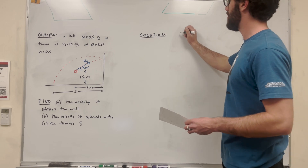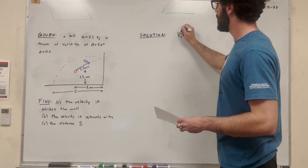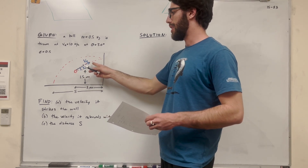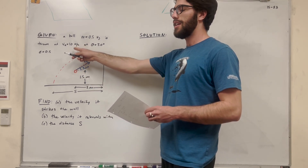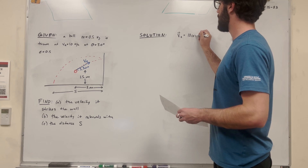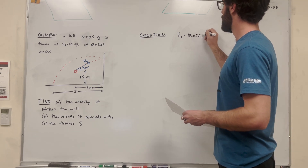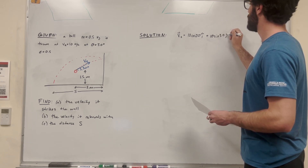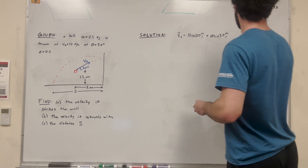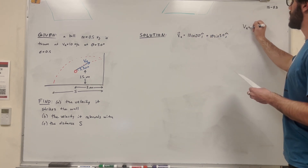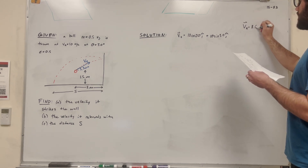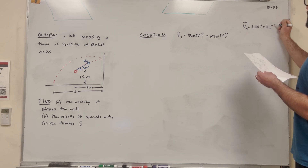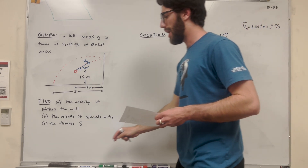Let's write VA in vector form — we want it in i and j. So if we want to find the x-component of VA, we're going to take 10 meters per second cosine of 30 to get the x-component, and the j component is going to be 10 sine of 30. So we can write VA as a vector: that's going to be 8.66i plus 5j meters per second.